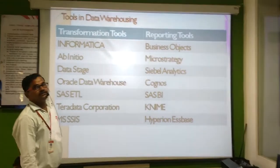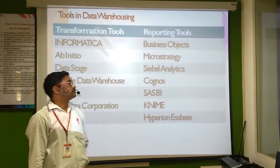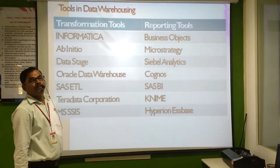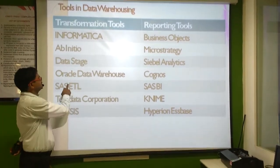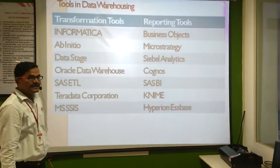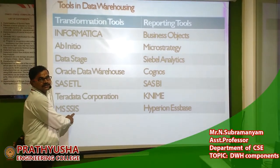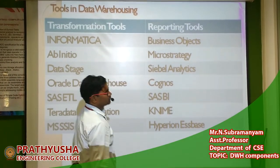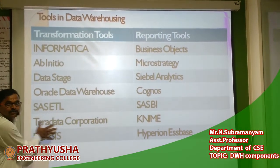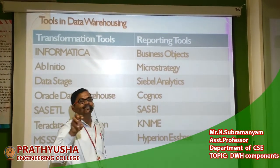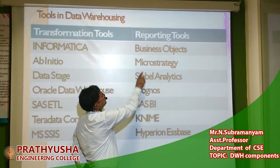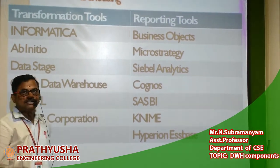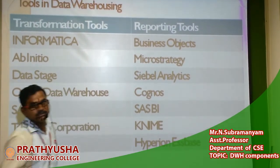The tools in the data warehouse scheme are of two types: transformation tools and reporting tools. Transformation tools available in the market include Informatica, Abinitio, DataStage, OIT Data Warehouse, SAS ETL, Teradata Corporation, and MS SSIS — Microsoft SQL Server Integration Services. Reporting tools are used for descriptive and visualization analysis. They include Business Objects, MicroStrategy, SAS BI, Cognos, and Hyperion. These are the basic components of the data warehouse scheme.